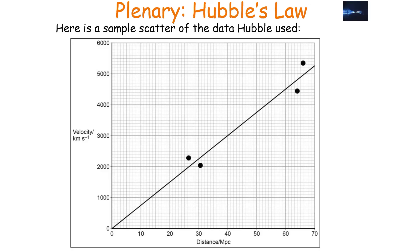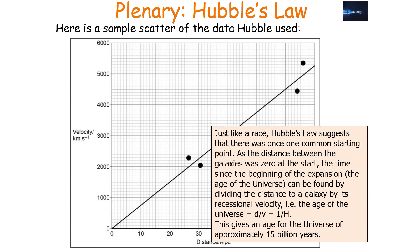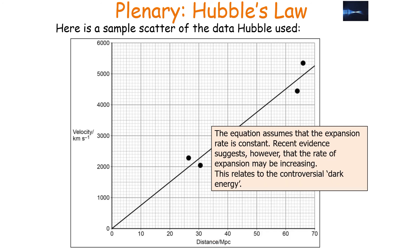Here is a sample scatter of the data Hubble used. The data suggests the universe is expanding — it's like being an average runner in a race: those in front are faster and moving away from you, and you are moving away from those behind. From your point of view, everyone appears to be moving away. Hubble's Law also suggests there was one common starting point, giving an age of the universe of approximately 15 billion years. However, recent evidence suggests the rate of expansion may be increasing, relating to the controversial idea of dark energy.